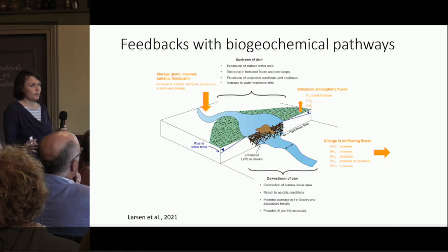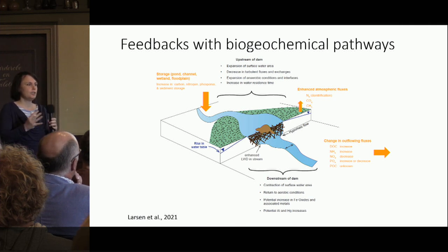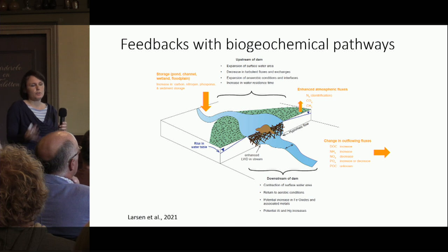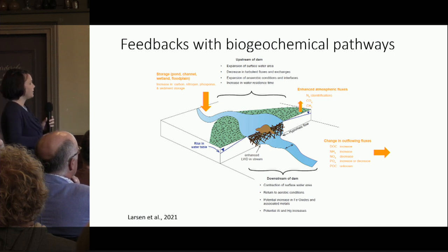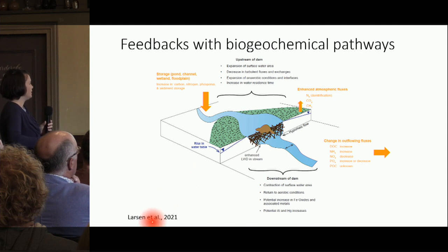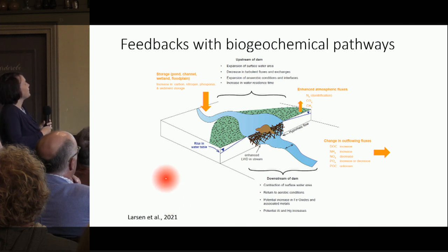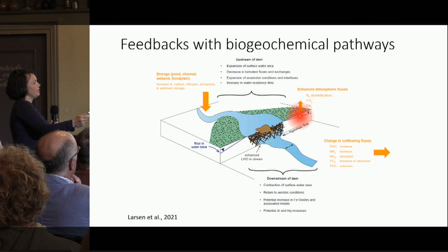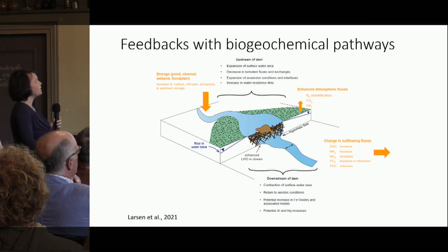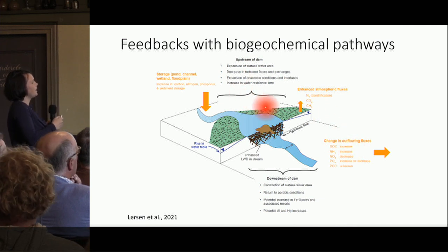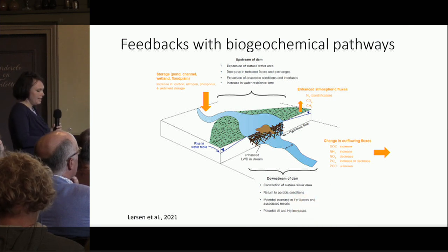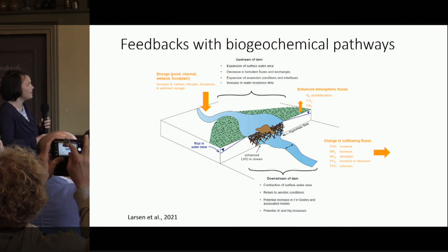Through all these changes that the beaver makes, it changes biogeochemistry — it changes the chemistry of the water, or water quality. There are different types of changes that we have summarized here; you can read that in our recent paper, which is almost a book. We have a change in the outflowing fluxes of water, and a change upstream and downstream of dams.